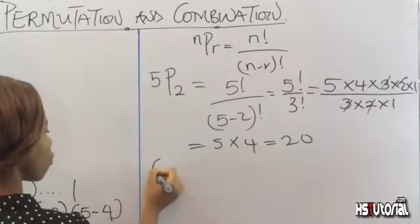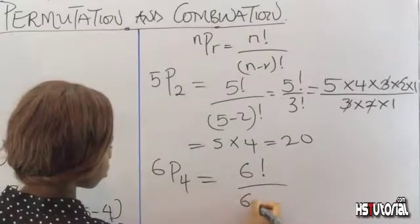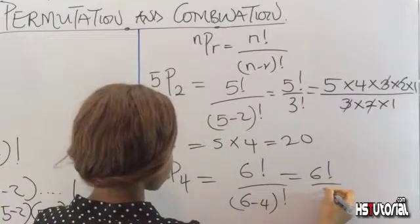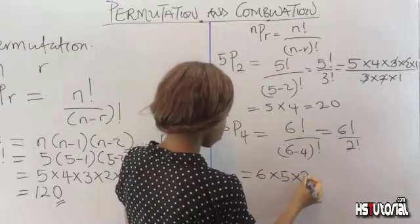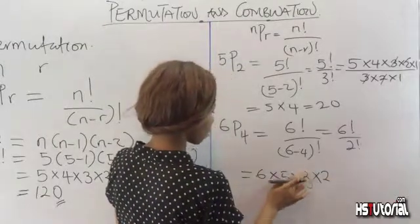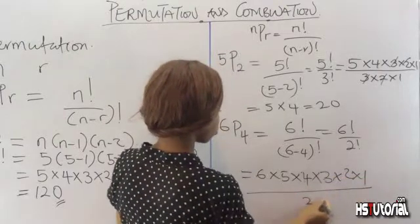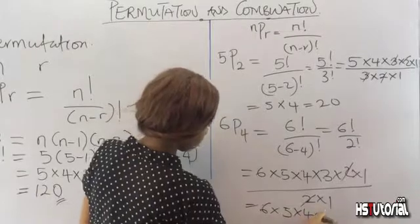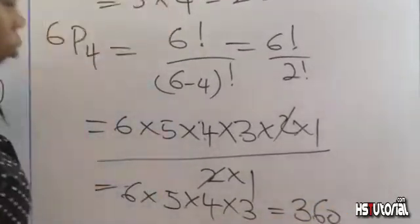Now let's take another example: 6 permutation 4. Feel free to try this on your own, then come back. 6 permutation 4 gives us 6 factorial over (6 minus 4) factorial, which is 6 factorial over 2 factorial. Expanding: 6 times 5 times 4 times 3 times 2 times 1, all over 2 times 1. The 2 times 1 cancels, leaving 6 times 5 times 4 times 3.